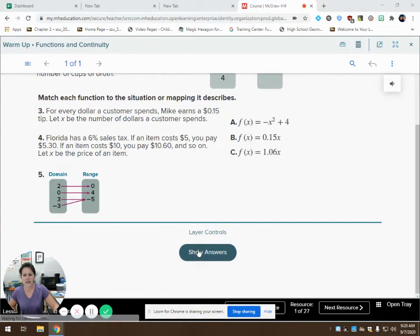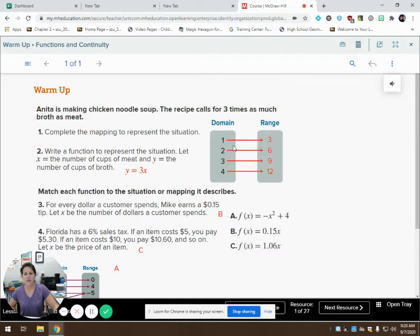So let's go ahead and show the answers so that we can see. So this is called a mapping because it shows that when she has one cup, or one piece of meat, she has three times as much broth. Two times the meat, still three times as much, which results in six being the amount of broth.